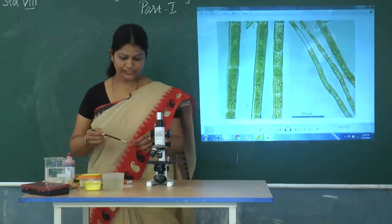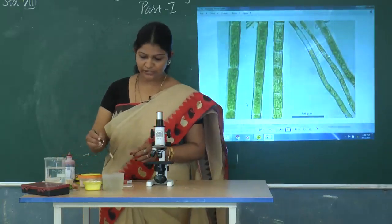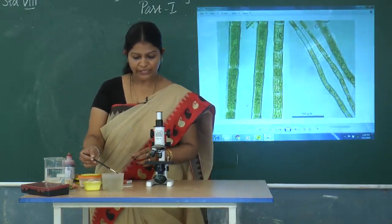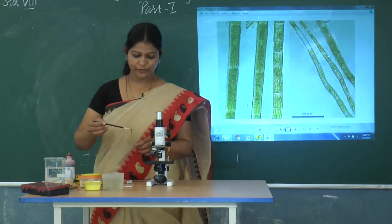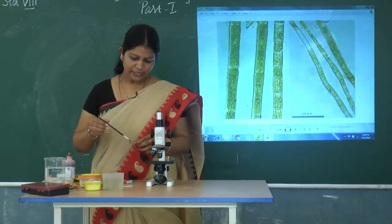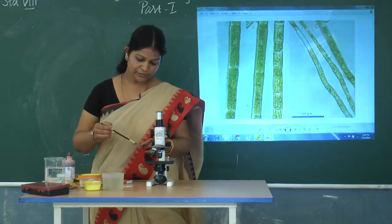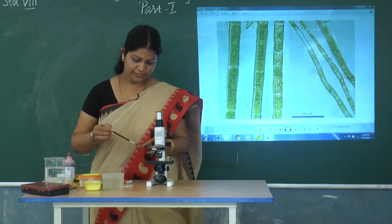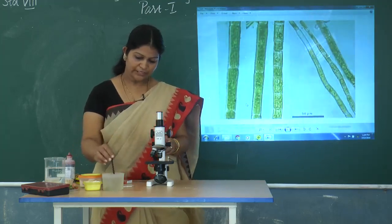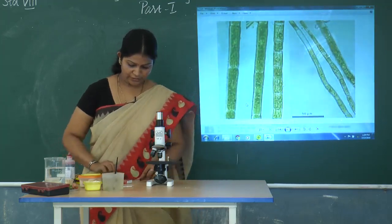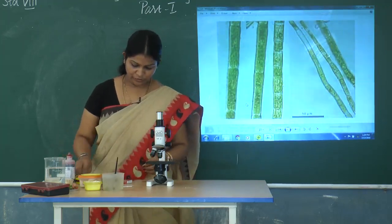Now we are going to do an activity on algae. To collect the algae, you have to take scrapings from the wall of any tank. You have to scrap a piece of algae, add a drop of water on the slide, put the algae scrapings on the slide, and then carefully place the cover slip over it.